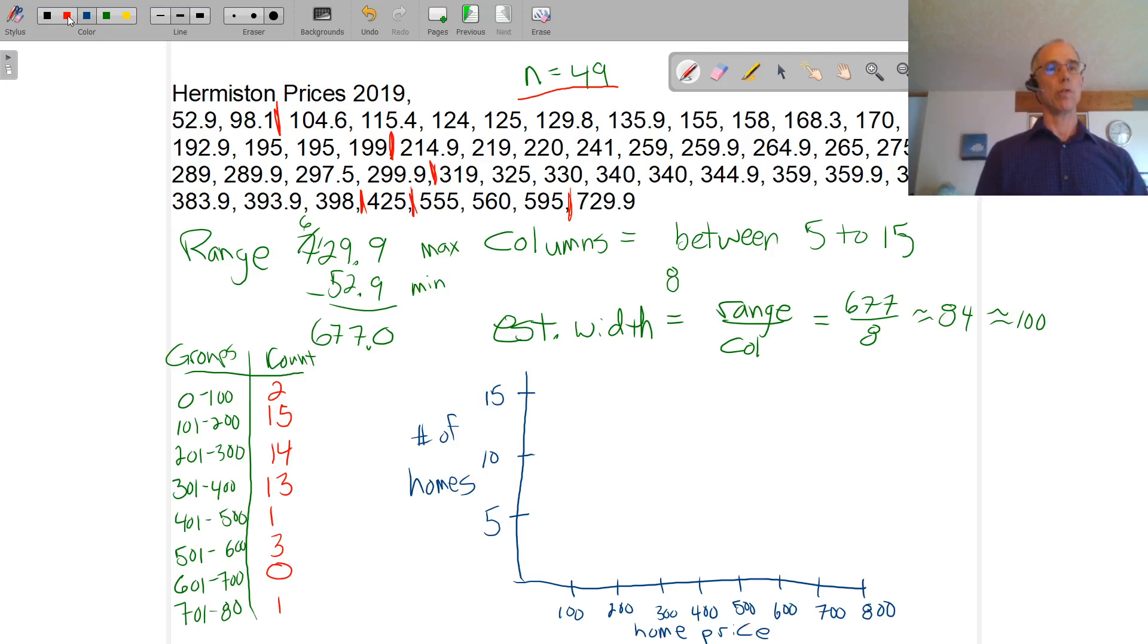And then we make a column for each of those. So the first column is only two highs. So maybe that's about here. The next column was 15. And the next one was 14, just a hair lower. And then 13. And 1. And then 3. And then 1. So that's my histogram.